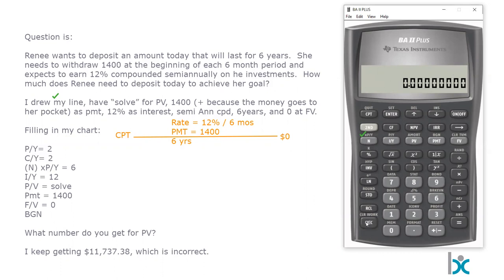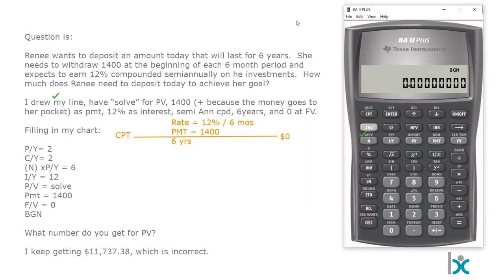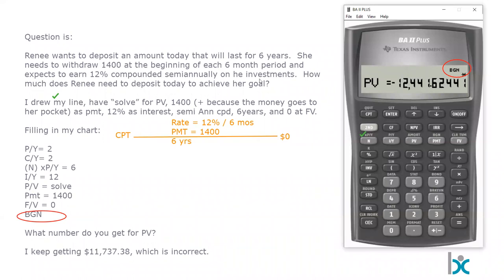We flip over to the begin submenu: second function, begin. I use the set button to change it over to begin. I now see 'begin' on my screen and quit out. I need to see that little 'begin' on my display, which matches what the student rightly identified — we're solving this in begin mode. Now I compute my present value and get $12,441.62. That is the correct answer.